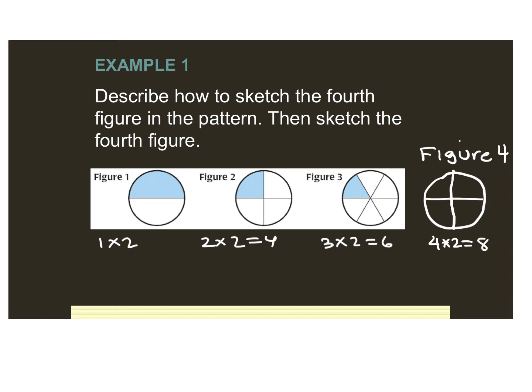Let me go ahead and draw those 8 sections. Each one had one of the sections shaded in, and that one was always up above the middle line. That's how we look at what happened in the past to figure out the next figure in our pattern. Again, this is using inductive reasoning.